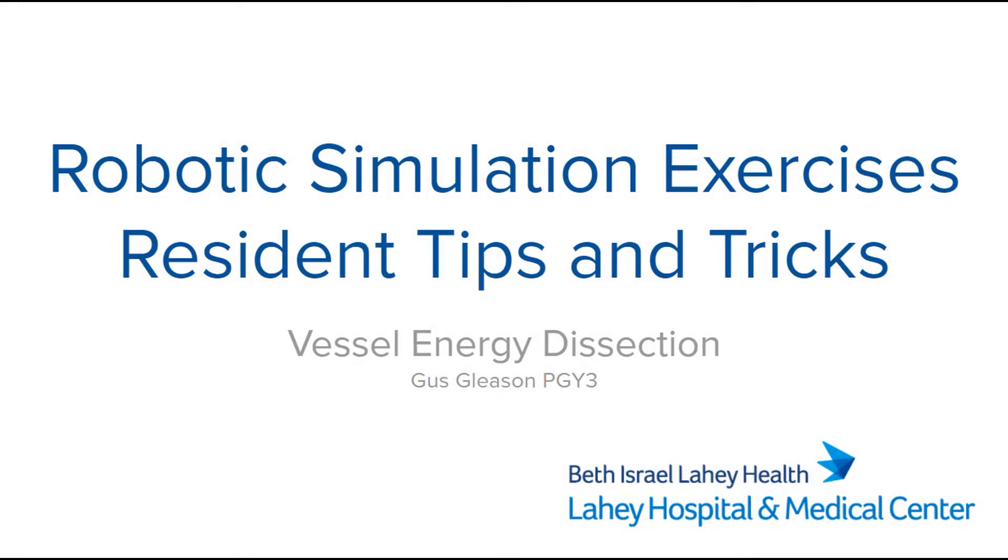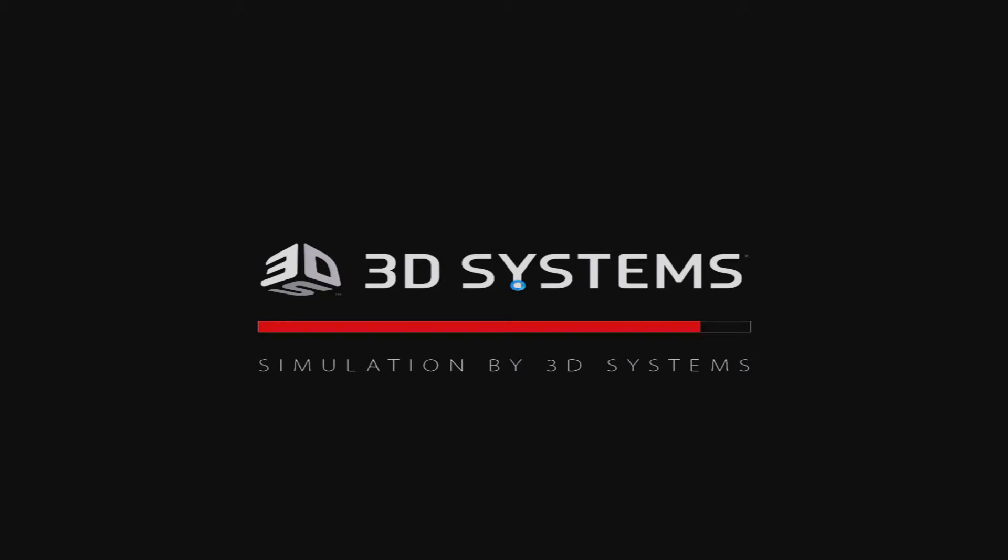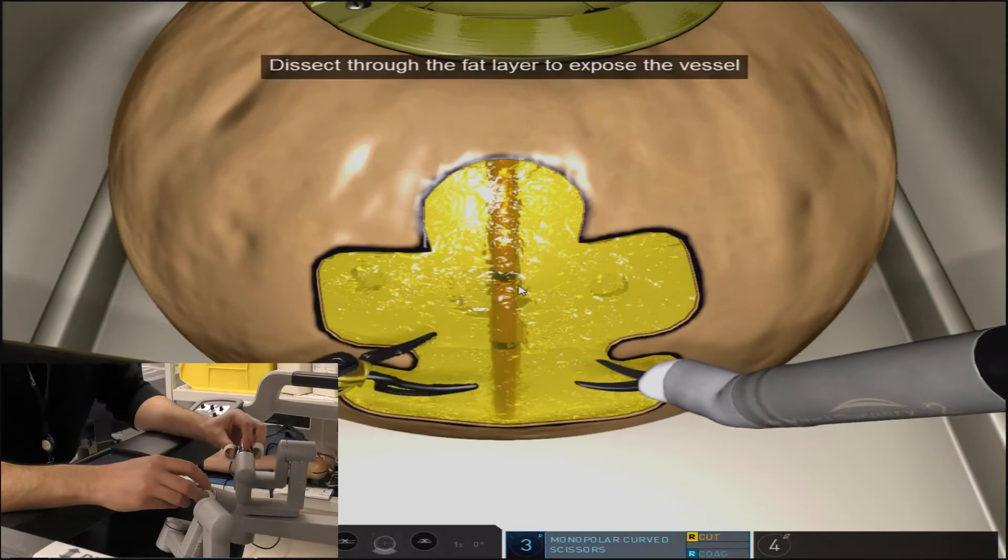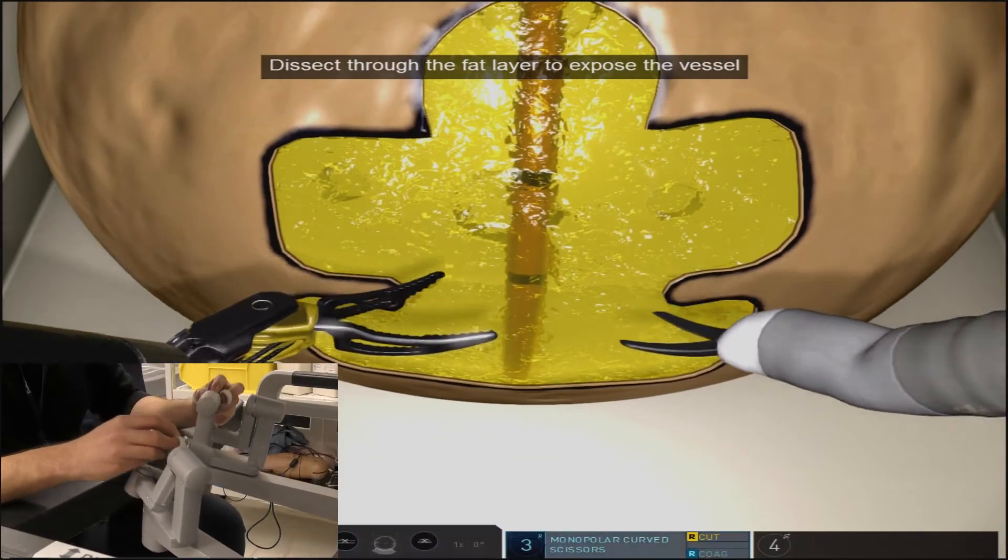Vessel energy dissection is a simulated tissue exercise which requires you to dissect out a vessel, coagulate at two ends, proximal and distal, and transect in the middle of those coagulation points.